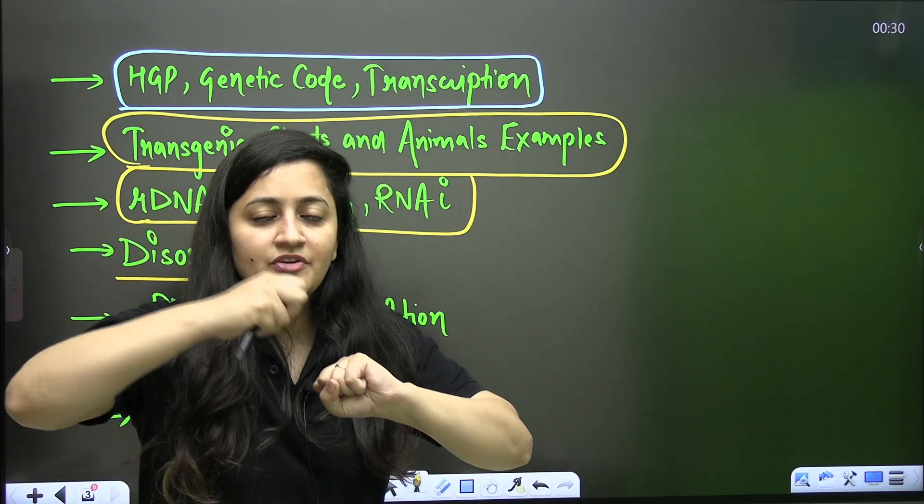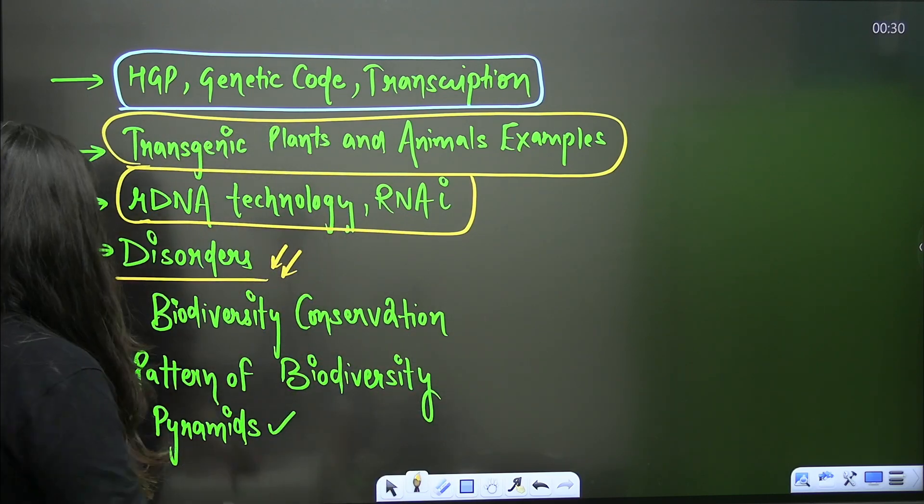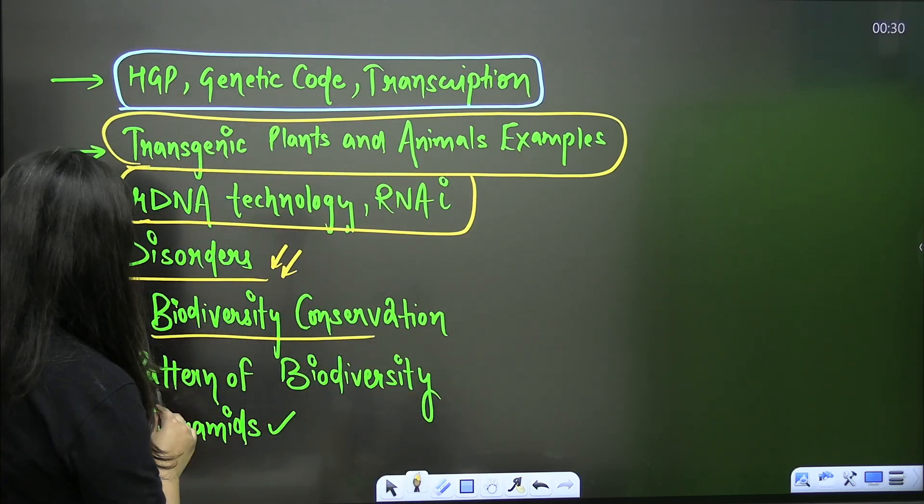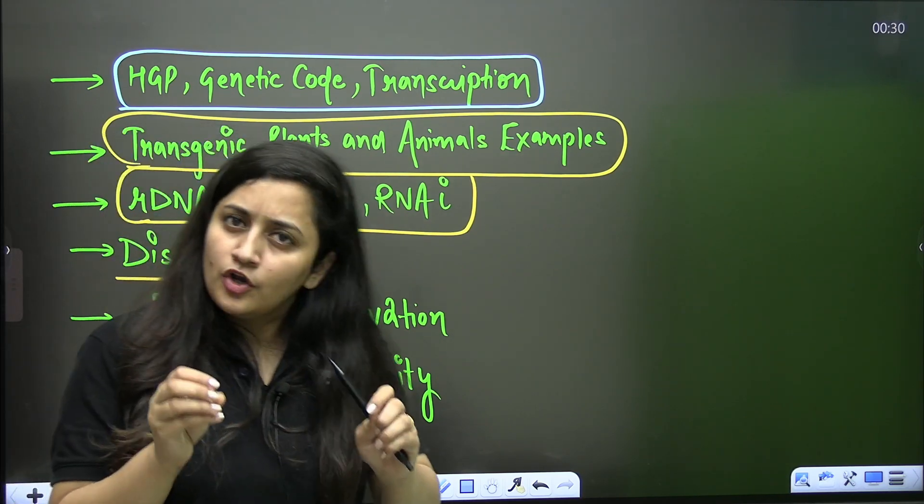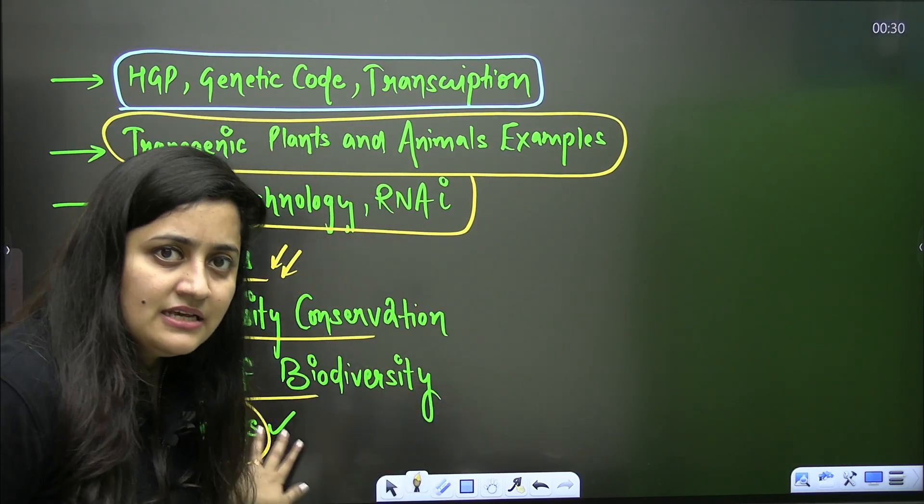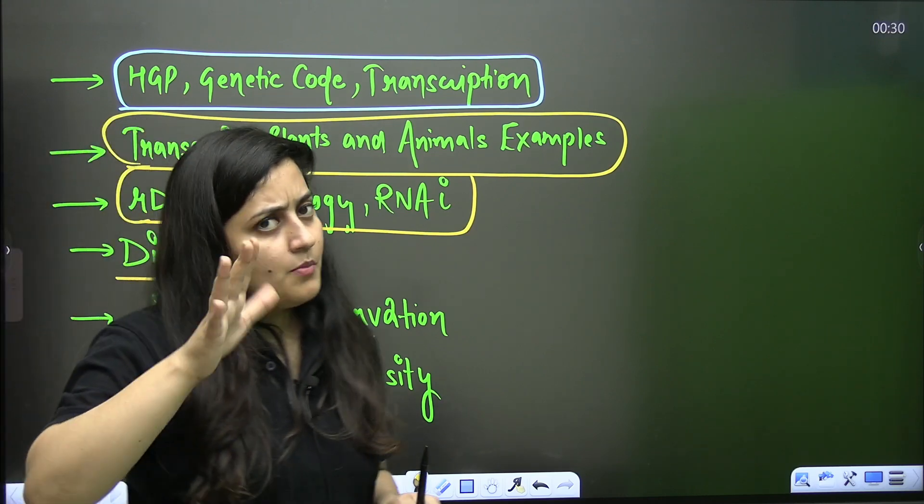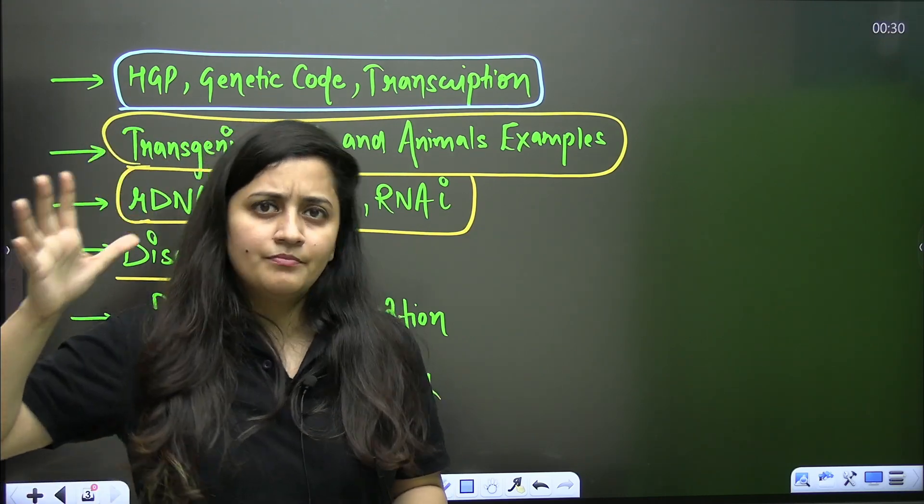Then biodiversity conservation, patterns of biodiversity, pyramids - your age pyramids, ecological pyramids. Everything is important here. Now from organism and population also many parts, like many topics are deleted.